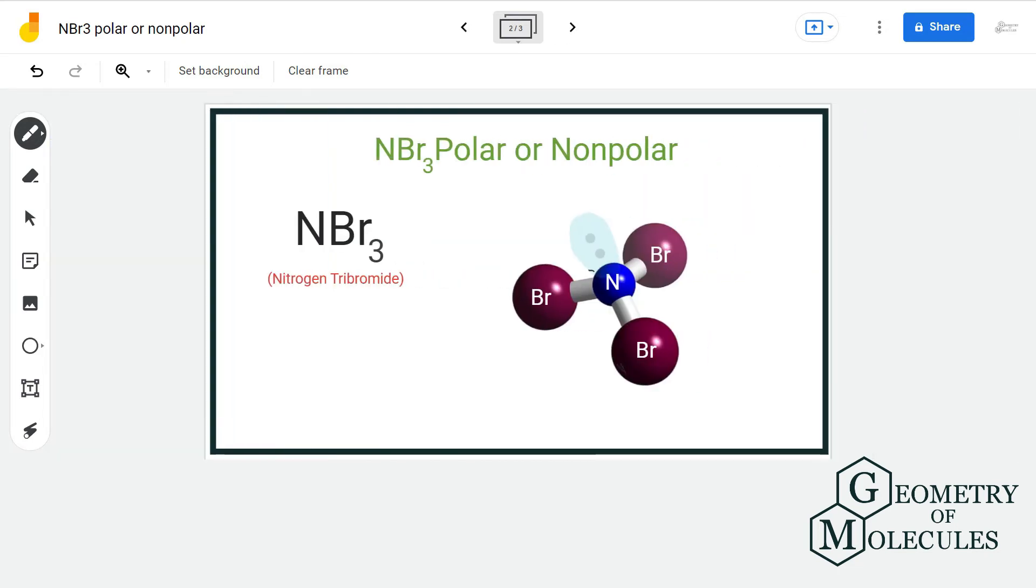can say that each nitrogen-bromine bond is polar covalent in nature, and there will be a dipole moment oriented in the direction of bromine as it is the more electronegative element among the two. We saw earlier that the